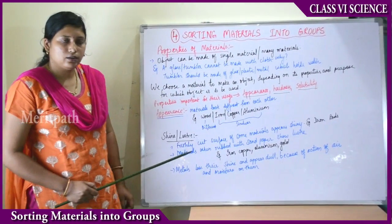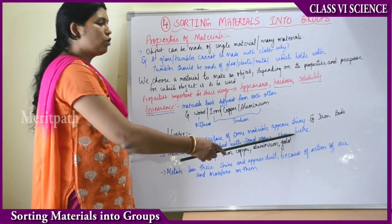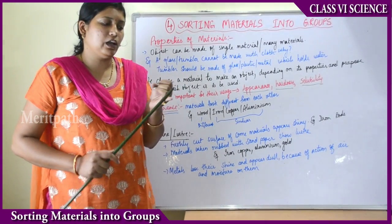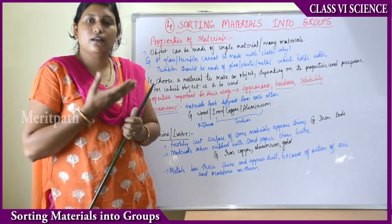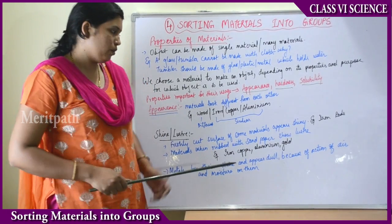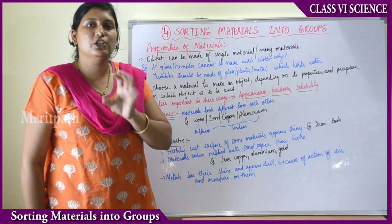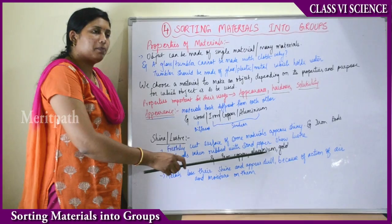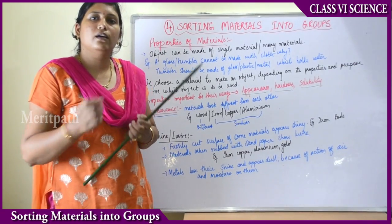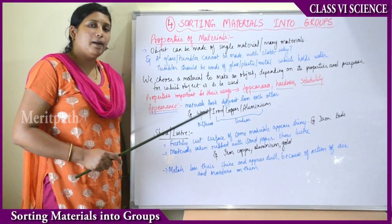Iron rods look shiny when cut on machines. Also, materials when rubbed against sandpaper show luster. Sandpaper is a paper-like thing available in yellow or black color with small sand-like particles on a rough surface. When you rub any metal onto that surface, the metal's layer looks shiny. Iron, copper, aluminum, and gold when rubbed on sandpaper will look lustrous — the rubbed surface will be shiny.